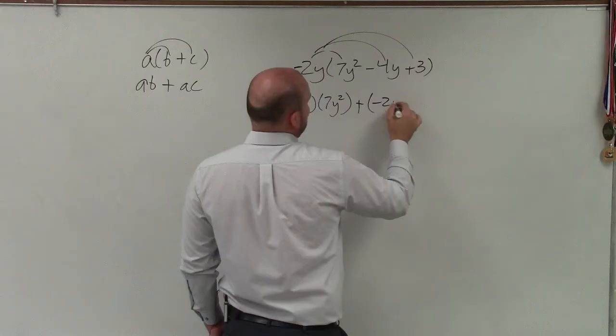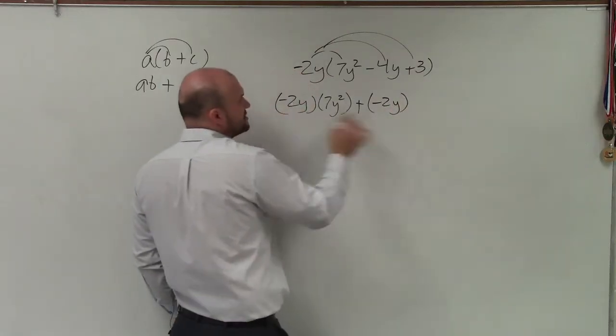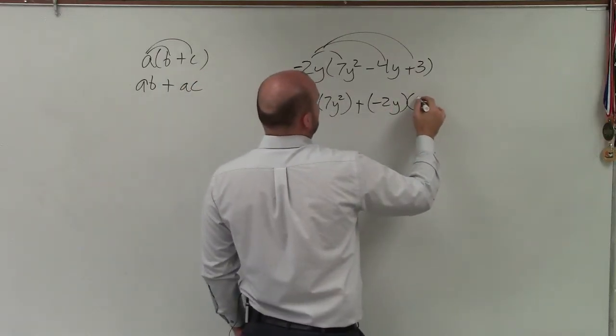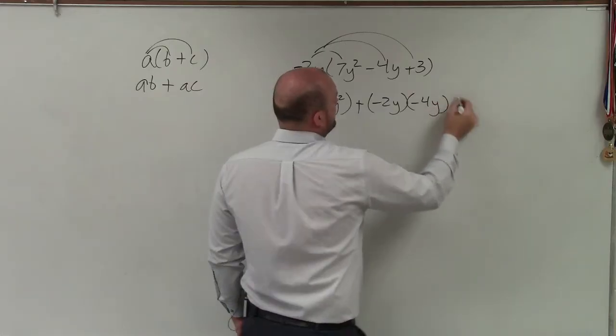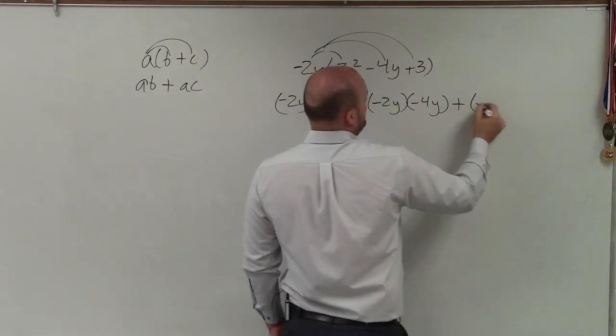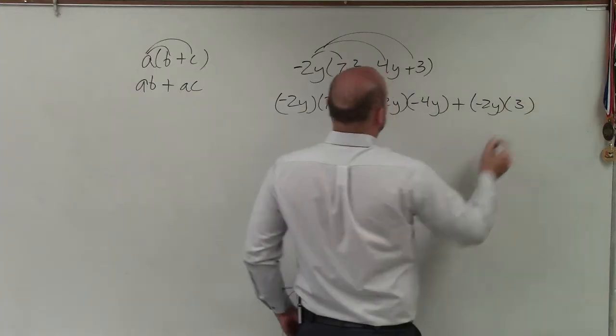And actually, I'm just going to add them, negative 2y. Because really, what I'm doing is just multiplying these to negative 4y plus negative 2y times 3.